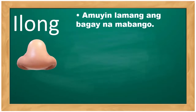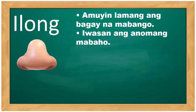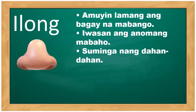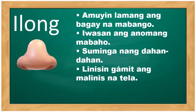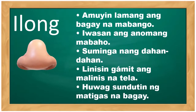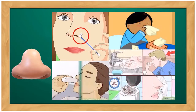Ilong — ano ang gamit ng ilong? Ito ay pangamoy. Amoyin ang bagay na mabango; iwasan ang anumang mabaho; suminga ng dahan-dahan — kapag may sipon ka, huwag suminga ng bigla kasi dudugo ang iyong ilong. Linisin gamit ang malinis na tela lamang. Huwag sundot ng matigas na bagay. Makikita natin sa larawan kung ano ang mga dapat mong gawin. Pangangalaga sa tainga: mahalaga itong pangalagaan upang marinig natin ang ating kapwa at ang ingay na naririnig sa paligid.